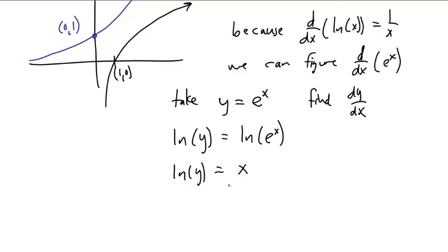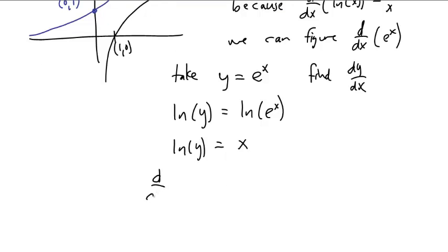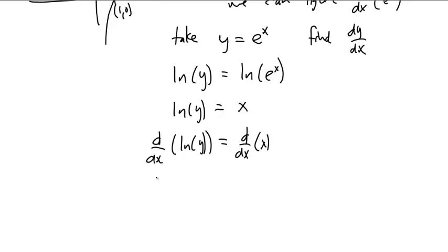If we take the derivative of both sides, we take the derivative with respect to x of the natural log of y and the derivative with respect to x of x. On the left we get one over y dy dx. The derivative of the natural log of something is one over that something times the derivative of that something, dy dx, and the derivative of x with respect to x is one.